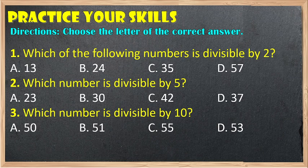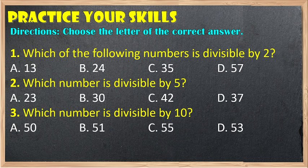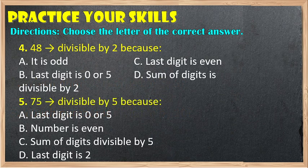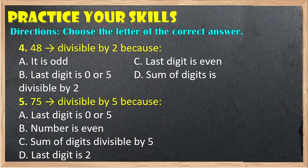Question 1: Which of the following numbers is divisible by 2 — A, B, C, or D? Question 2: Which number is divisible by 5 — A, B, C, or D? Question 3: Which number is divisible by 10 — A, B, C, or D? Question 4: Is 48 divisible by 2, and why — A, B, C, or D? Question 5: 75 is divisible by 5 because — A, B, C, or D? Comment your answers in the comments section below. That's it for today. Thank you and God bless everyone.